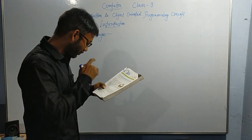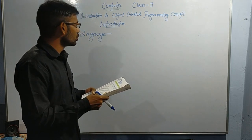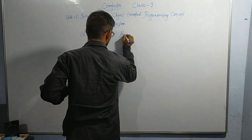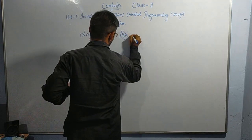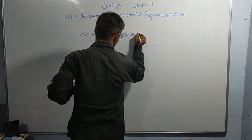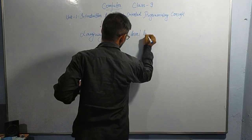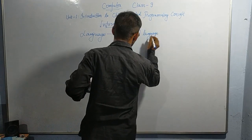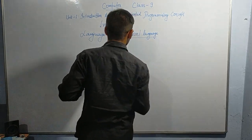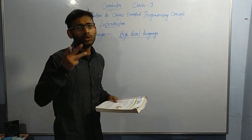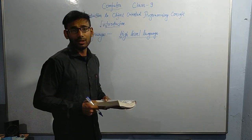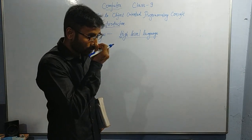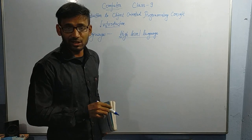Java is a high level language. In case of high level language, there are two types: procedure oriented and object oriented.